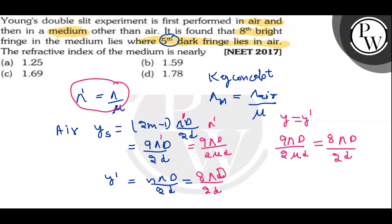That will be cancel out. You can cancel out lambda D. Okay, lambda D, 2D. Then, 9 lambda D. Here, 2D will also get cancel out. Okay, 2D bhi cancel ho jayega.